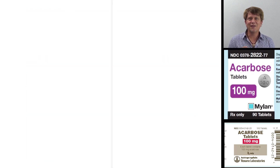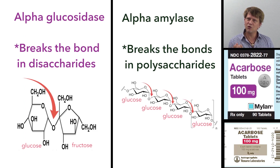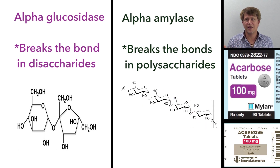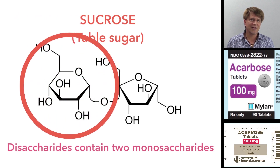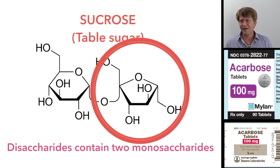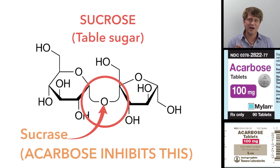These carbohydrates — polysaccharides and disaccharides — are really just sugars that have bonds in between them, and we need specific enzymes to break up those bonds. For example, sucrose is a disaccharide: it has glucose and fructose with a bond in between them. In order to get that glucose and fructose into your system, you're going to need to break that bond.